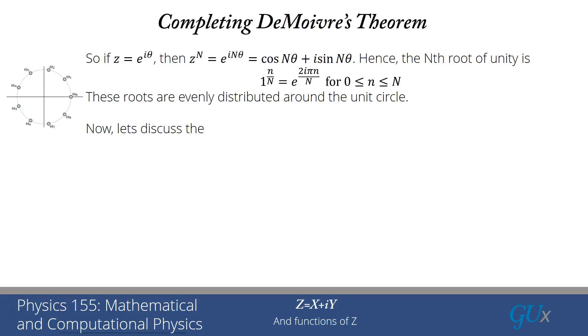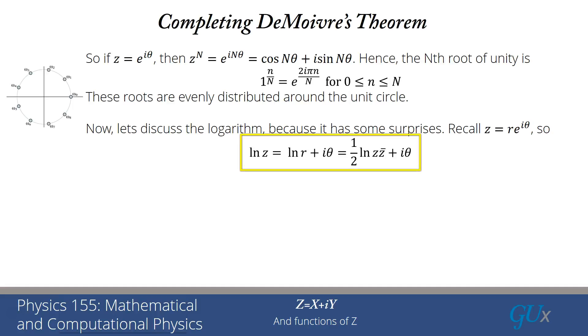We're going to move on to discussing the logarithm because it has some surprises. Z equals r e to the i theta when expressed in polar coordinates. Taking the logarithm, I get log r plus i theta. I find this interesting. The real part is the logarithm of the radius, but then I have this complex piece, which is i times theta. We can also write this as 1 half log z z bar plus i theta. What's weird about this? Theta runs between 0 and 2 pi in the complex plane, but the logarithm doesn't come back to itself.